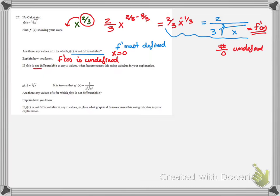If f of x is not differentiable at any x values, what feature causes this using calculus in your explanation? So we know f prime of 0 is undefined. And so therefore we know we are not differentiable. Well there's only two possibilities for that. Unless we had a piecewise function. And even for that,